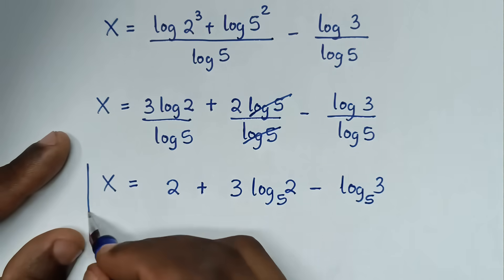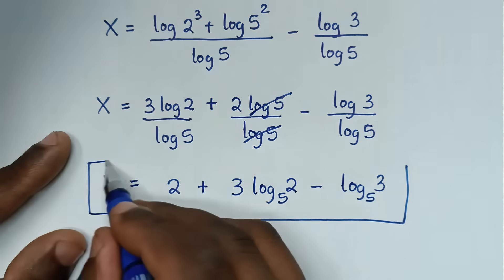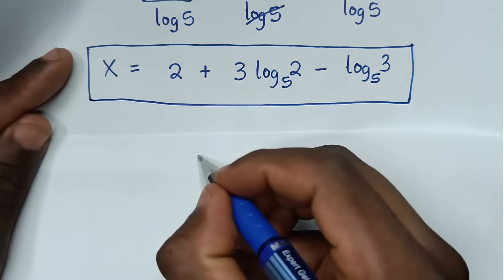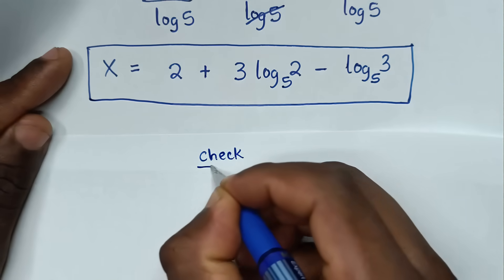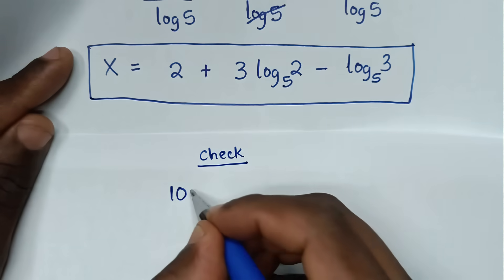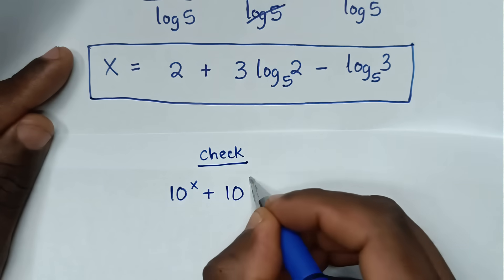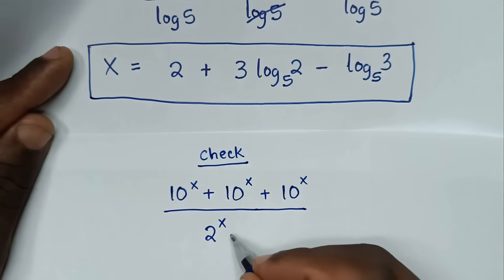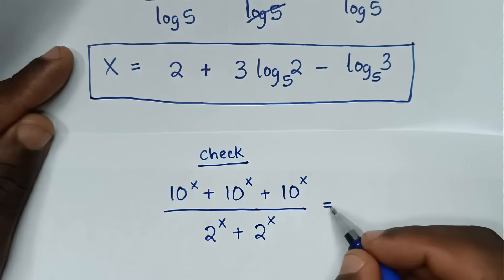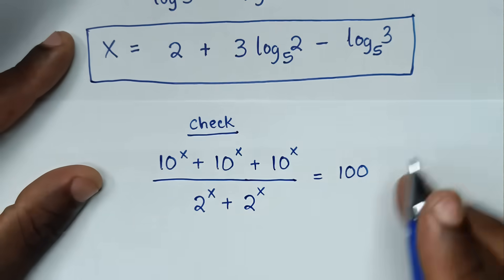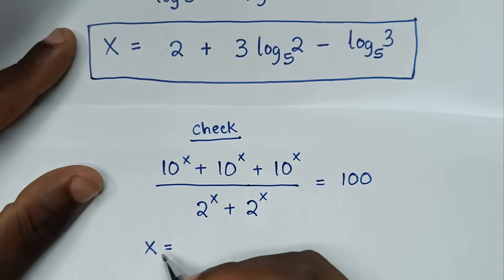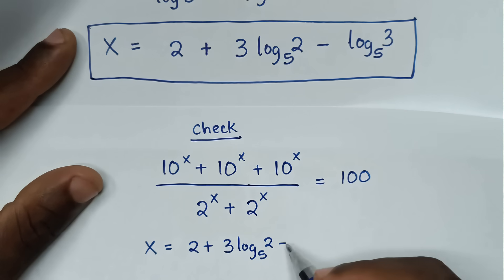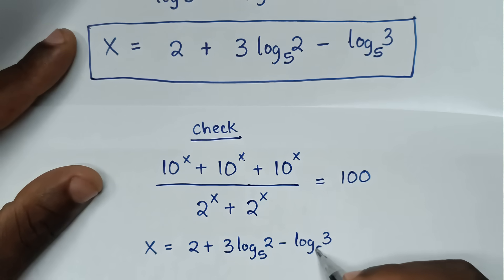So this is the final answer for the value of x in this problem: x is equal to 2 plus 3 log of 2 base 5 minus log of 3 base 5.